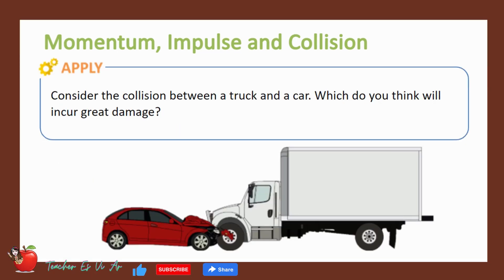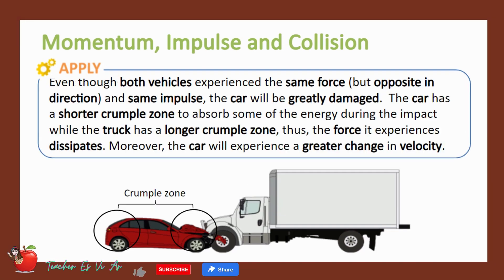Let us apply what we have learned. Consider the collision between a truck and a car. Which do you think will incur greater damage? Even though both vehicles experience the same force, but opposite in direction and same impulse, the car will be greatly damaged. The car has a shorter crumple zone to absorb some of the energy during the impact, while the truck has a longer crumple zone; thus, the force it experiences dissipates. Moreover, the car will experience a greater change in velocity.